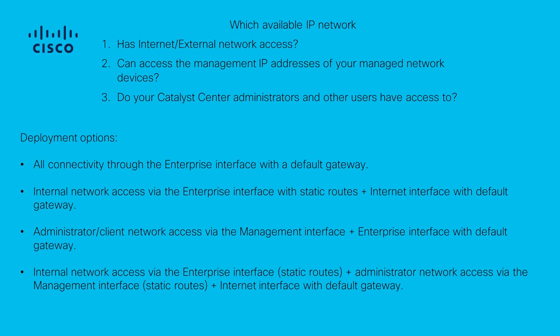If two of these roles need to be carried out on different networks, you'll need to use the Enterprise port and either one of the Management or Internet ports. One port will have the default gateway assigned, while the other will utilize static routes. If each role requires its own IP network to operate, then all three of the Enterprise, Management, and Internet ports will be used. The default gateway is assigned to the Internet port. Static routes to your administrator network should be configured on the Management port, and the static routes to all device management networks should be configured on the Enterprise port.